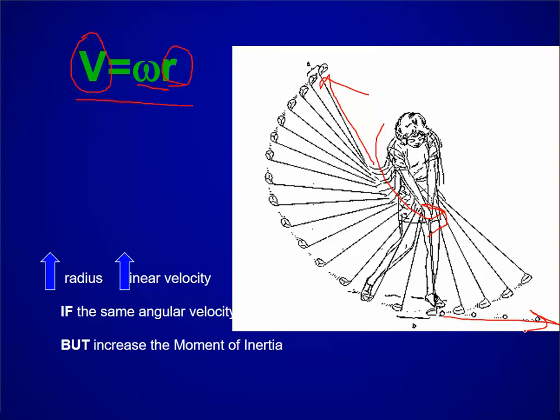And that's why we use rackets, golf clubs, to really increase the speed, the linear velocity on the ball. So if you increase radius, you increase the linear velocity if the angular velocity is the same.